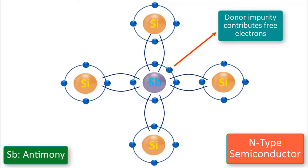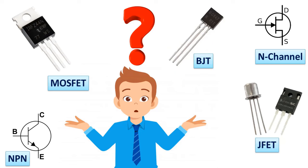You may know or have heard of transistors such as BJT, MOSFET, JFET, NPN, NCH, and many more, but you may have trouble distinguishing them. If so, this lesson is for you. At the end of this video, we will basically learn that all three-pin circuit elements are not transistors, how transistors are classified, and how we can distinguish them.